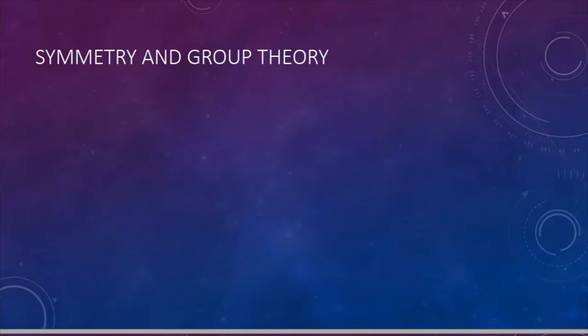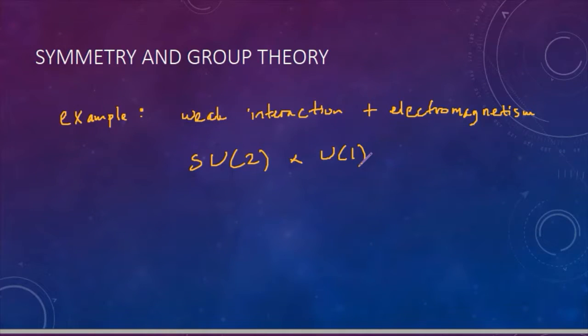Symmetry has been central to physical theory. For example, weak interaction and electromagnetism can be put under one symmetry group. The weak interaction is responsible for radioactive decay, and electromagnetism is for electric and magnetism. But when they put together in one symmetry, this is the interaction, and they predict the existence of W plus, W minus, and Z bosons.